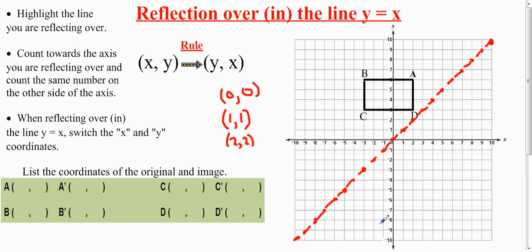That's the line y equals x — now you know what you're reflecting over. Just like with a reflection over the y-axis or x-axis, you always count towards the reflection line. So I'm going to count point A towards the reflection line: one, two, three, four — I hit the reflection line. Now I go down that same amount: one, two, three, four, and I label that A prime.